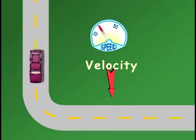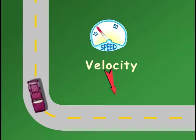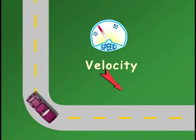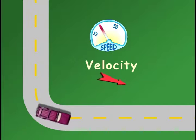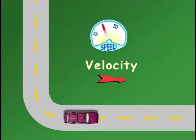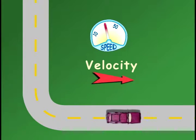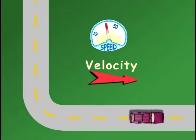The car starts out from home and we see the speed on the speedometer. Every time you change speed or direction, the velocity changes. The change in velocity over time is called acceleration.